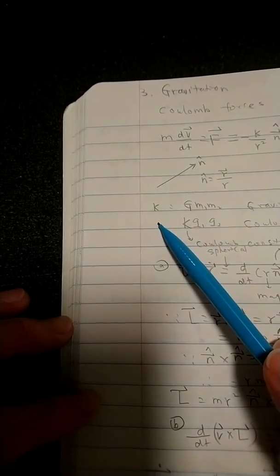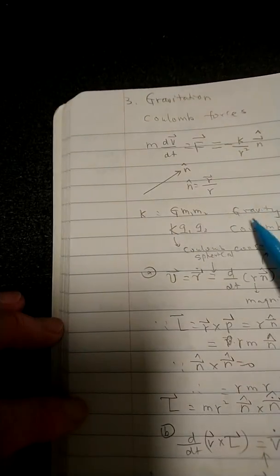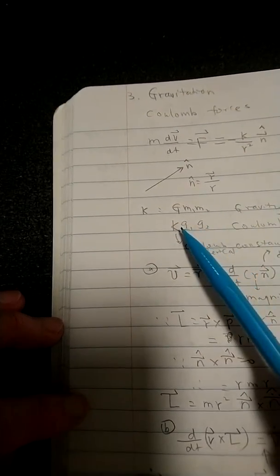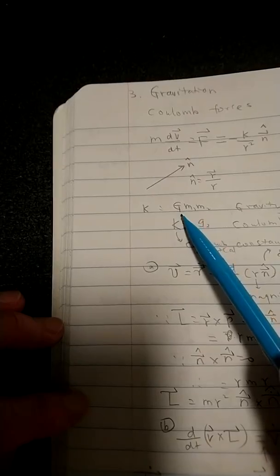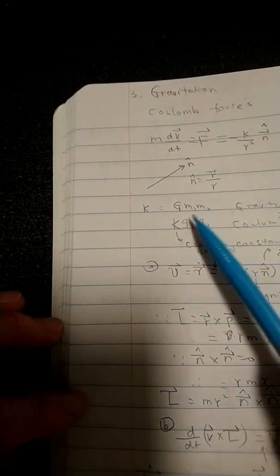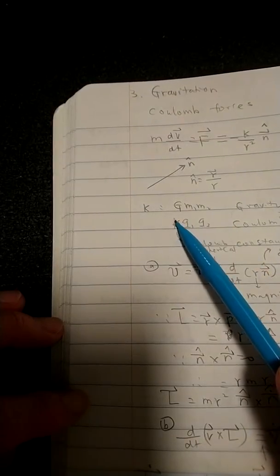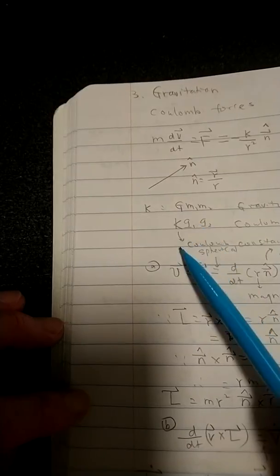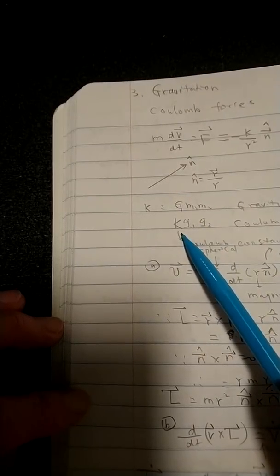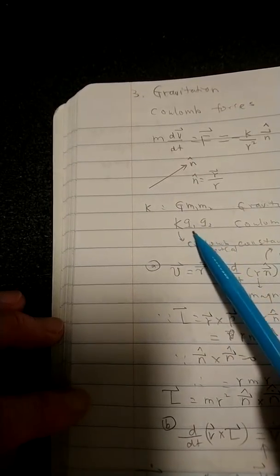Now k here, if you have gravitational gravity itself, this k is going to be equal to G times these two masses, m1 times m2. G is the universal gravitational constant. k here is the Coulomb constant times these two charges.